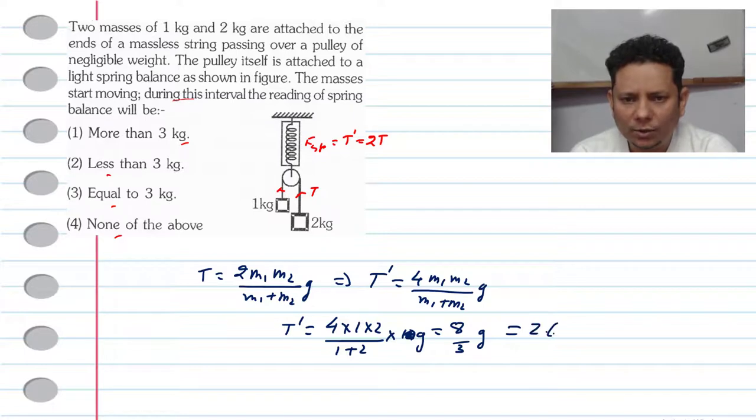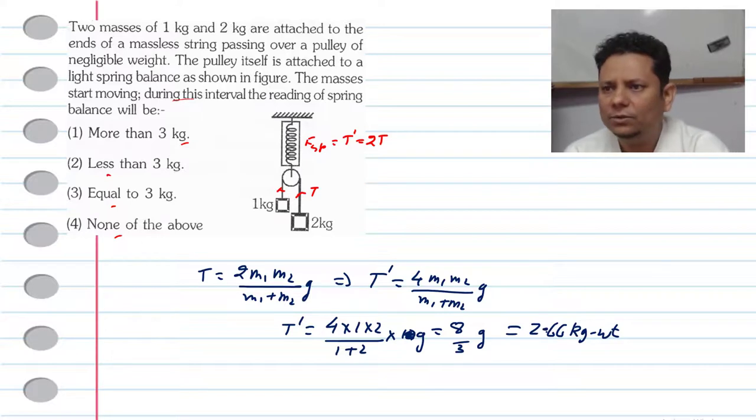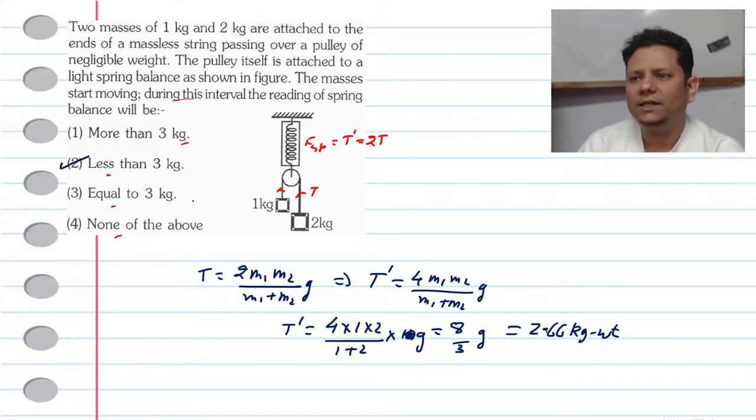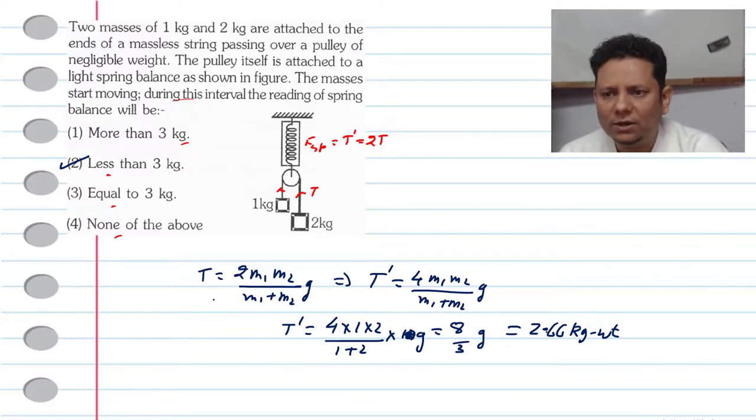T' will be equal to 2.66 kg weight. That is equal to less than 3 kg. And hence, option number 2, less than 3 kg would be the right answer.